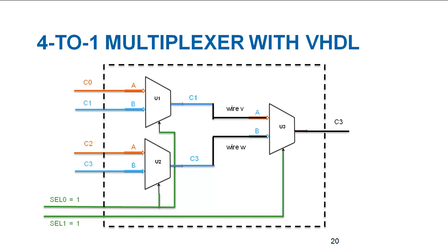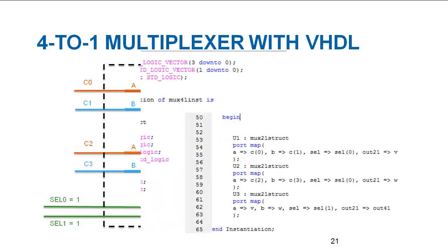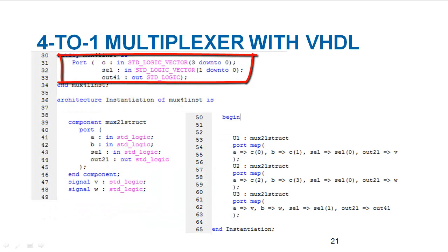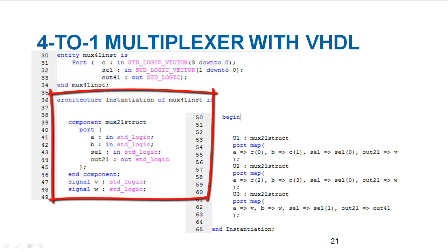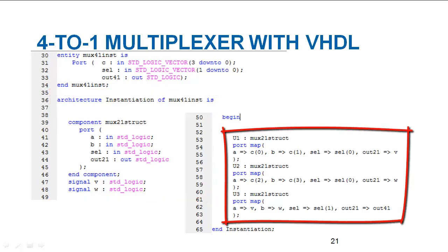The exact design is implemented with VHDL. The port is described first with C as 4-bit input vector to represent four input channels. Similarly, 2-bit control signal SEL and output out are described. In the architecture, the previously made two input MUX is brought as a component and then three instances of these components are used, exactly in the same way as described in block diagram in the previous slide.